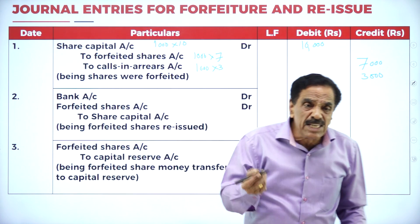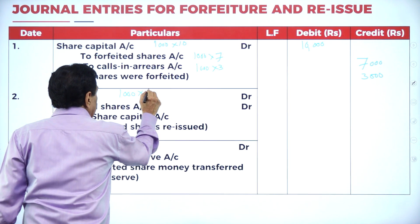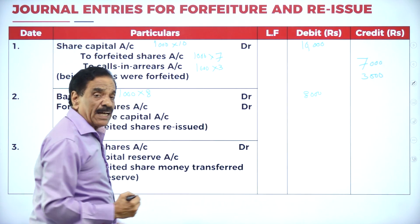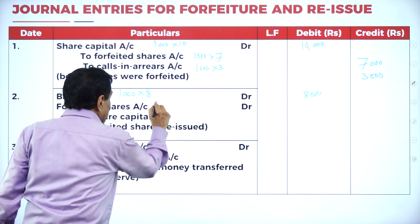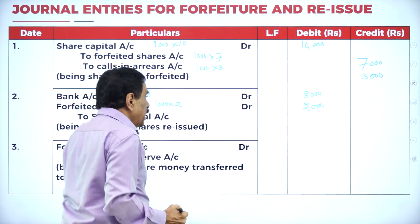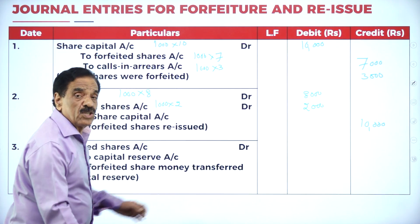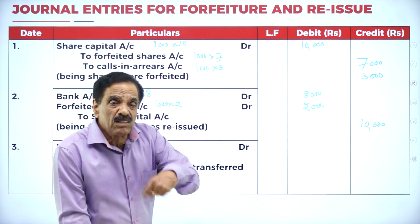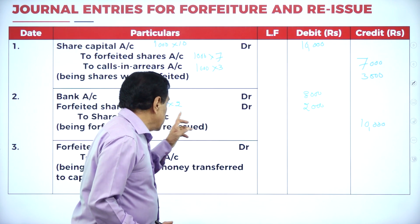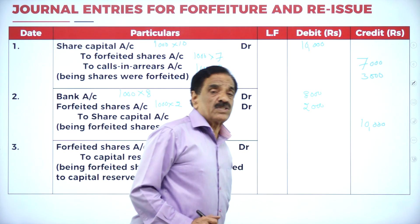Re-issue entry: reissued at ₹8. Bank Account Dr. 1,000 × 8 = ₹8,000. Forfeited Shares Account Dr. ₹2,000 (balance). To Share Capital Account ₹10,000. Actually we have to receive ₹10,000 but we received ₹8,000 from re-issue; the forfeited shares balance covers the remaining ₹2,000.